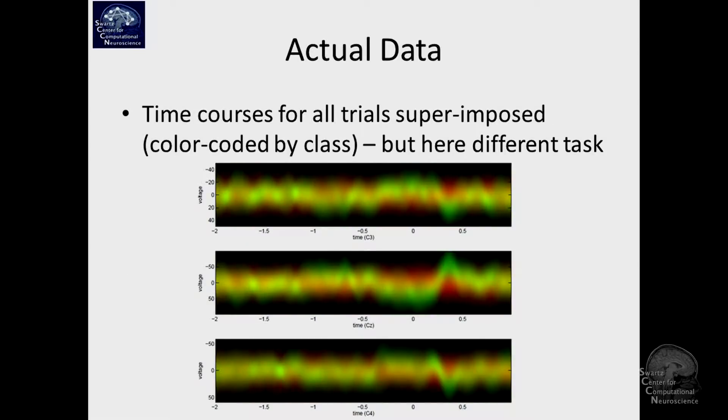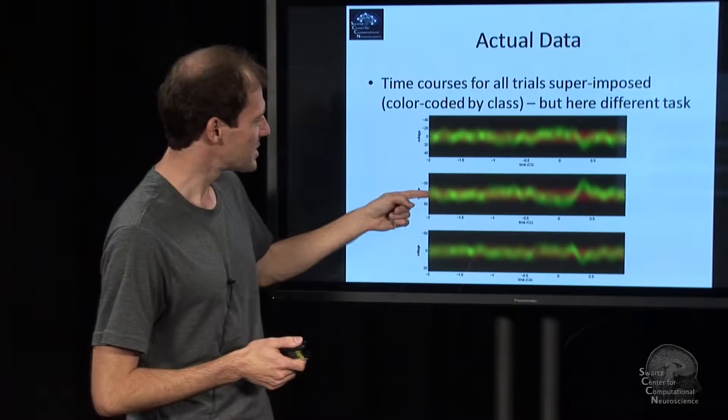Now let's plot these things. These are some ERP properties actually plotted for multiple trials in a stochastic manner. All the green trials give you this green distribution, all the red trials give this red distribution. In this particular case, it's actually a slightly different task, that's why the time courses are a bit different.